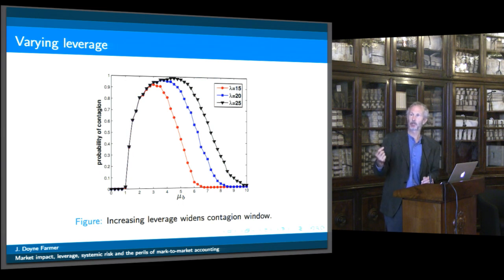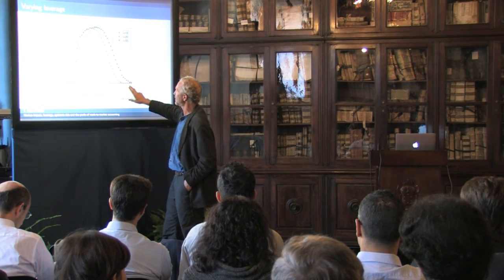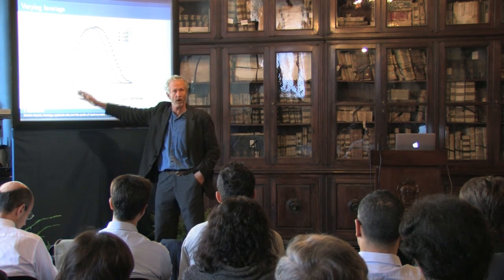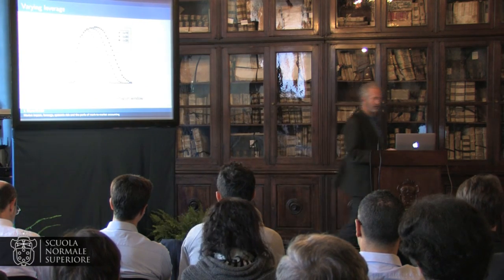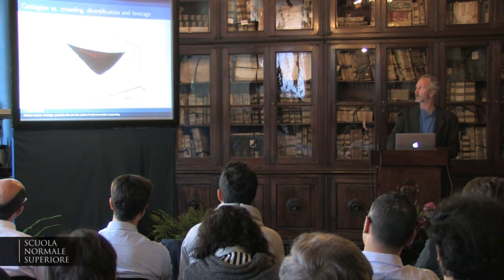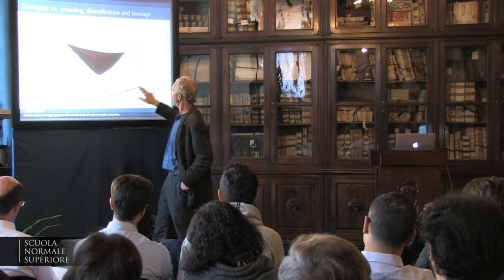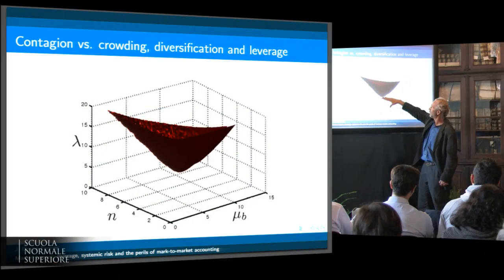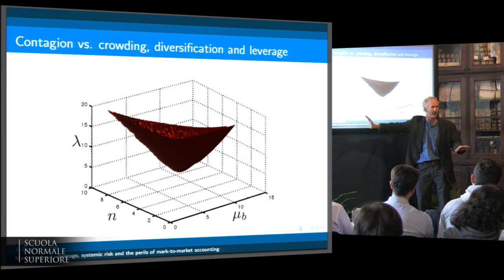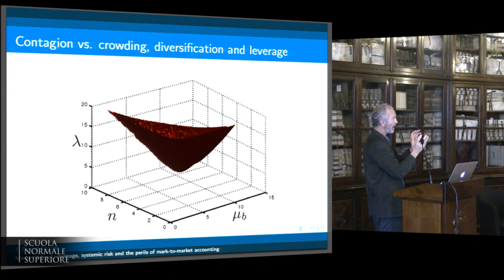You can vary leverage, and as you would expect, as you increase leverage things get worse. But interestingly, they only get worse on the high-diversification side, not on the low-diversification side. Meaning, it's only in the high-diversification limit that changing the leverage makes a difference. In a three-dimensional plot with crowding on one axis, diversification on another, and leverage on the third, we see there's a critical threshold of leverage where the system is just stable regardless of what the other parameters are. As the leverage goes above that threshold, depending on the other parameters, the system might or might not be stable, but the size of the unstable region gets bigger and bigger.